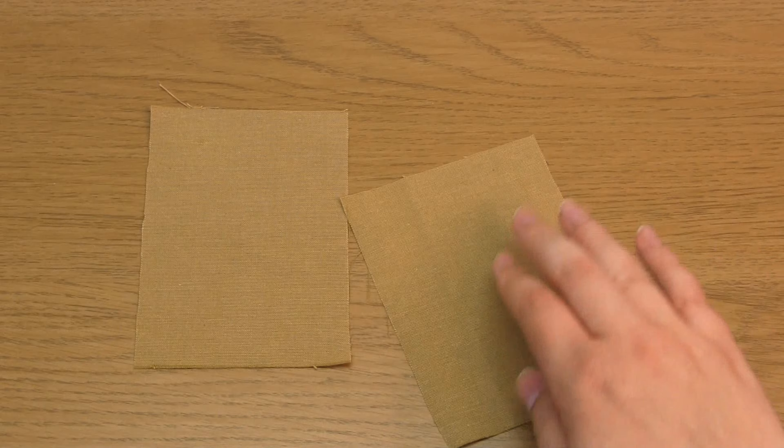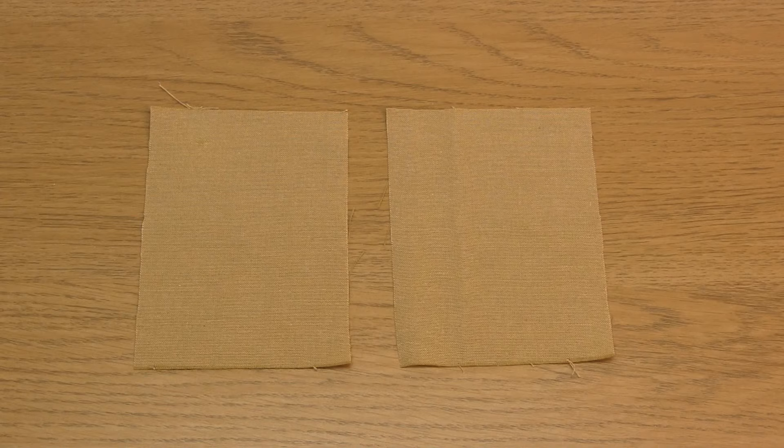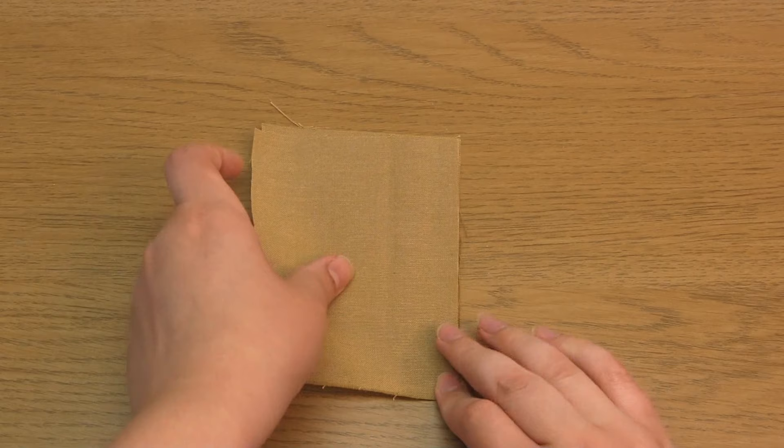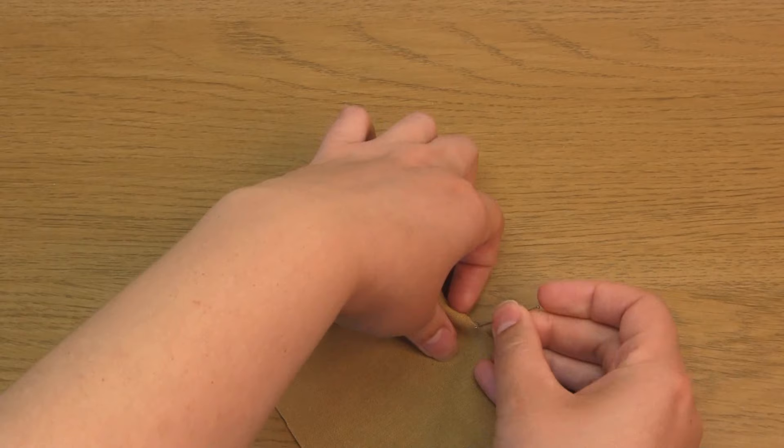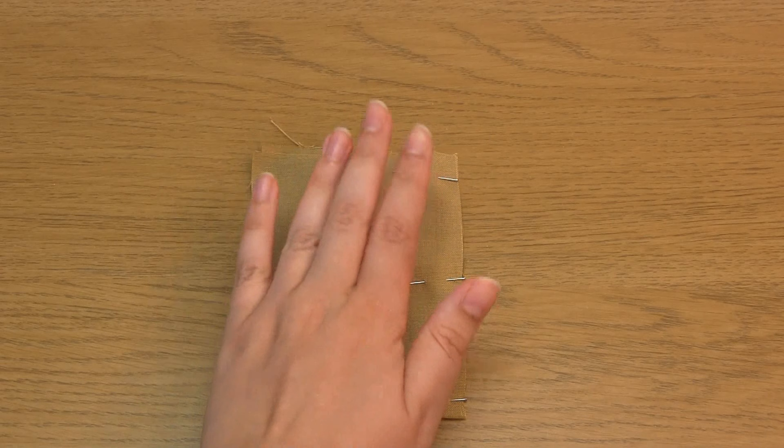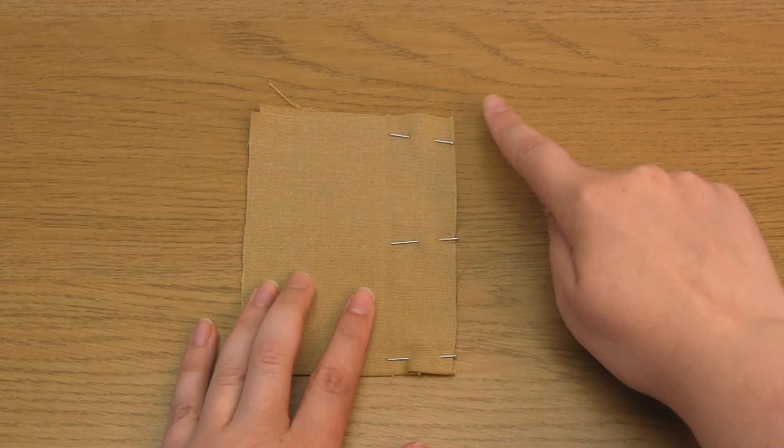Okay, so the first step is to place the fabric pieces wrong sides together, which is the opposite of what you would normally do when you create a seam. Then use pins to keep these fabric pieces in position. Note that you'll need to work out how much seam allowance you need before you begin, so that you'll end up with the seams where you want them. And I'll be talking a bit more about that later on.